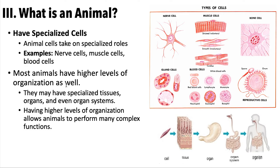Organ systems also have to communicate with each other — you can't have a digestive system without it being connected to the circulatory system. For some groups of animals we'll look at, we'll examine a simpler cell or tissue level. As we progress through the semester and learn about more complex animals, we'll focus more on the organ and organ system level.